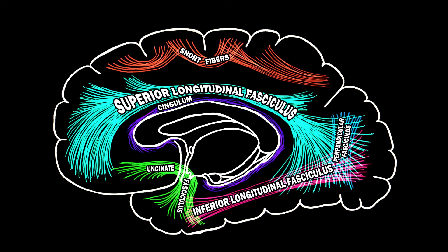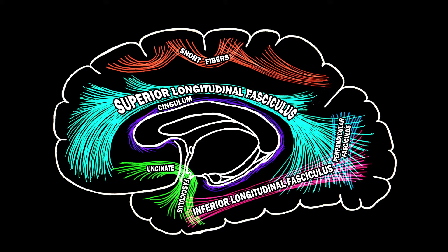Let's look at the association tracts now. There are two types: short association fibers, also called U-fibers, and long association fibers. The short association fibers lie immediately under the gray matter and connect adjacent gyri. The long association fibers connect more distant parts of the brain. Let's examine some of them.